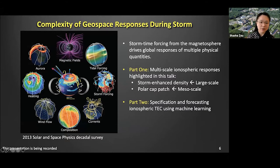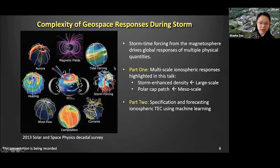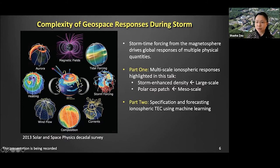The geospace system is quite complicated, depending on what physical parameters you focus on. For this presentation, we will highlight the ionospheric density or plasma content. In order to understand the multi-scale ionospheric structure, we have to look at other parameters as well: the currents, the thermospheric wind, the convection patterns, and the compositions. So the density really provides us a way of probing this complex system.